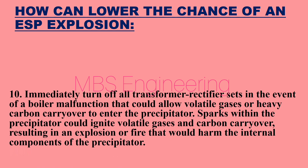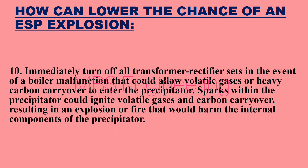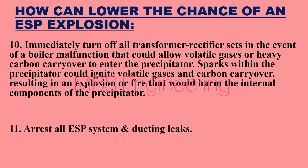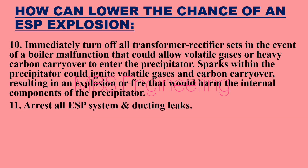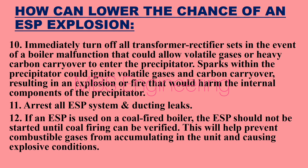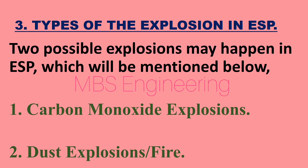Point 10: Immediately turn off all transformer rectifier sets in the event of a boiler malfunction that could allow volatile gases or heavy carbon carryover to enter the precipitator. Point 11: Arrest all ESP system and ducting leaks. Point 12: If an ESP is used on a coal-fired boiler, the ESP should not be started until coal firing can be verified. This will help prevent combustible gases from accumulating in the unit and causing explosive conditions.